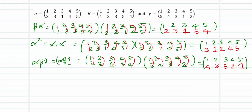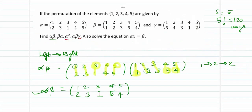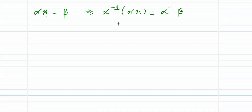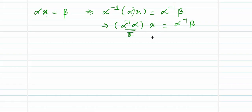Now let me take the last part of the question. We need to solve the equation alpha x equal to beta. To solve for x, I need to make x independent by multiplying both sides by alpha inverse on the left. This gives alpha inverse alpha x = alpha inverse beta. By the associative law, alpha inverse alpha is the identity element, so identity times x is x. Therefore x equals alpha inverse beta.